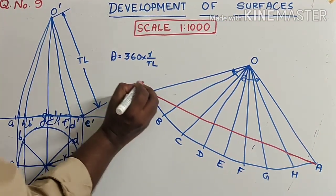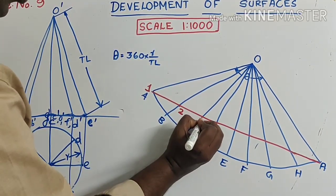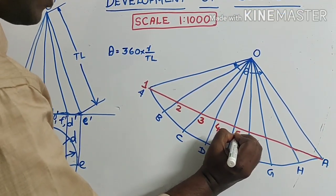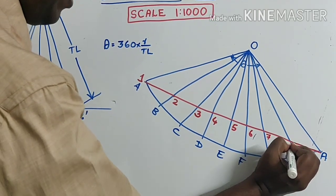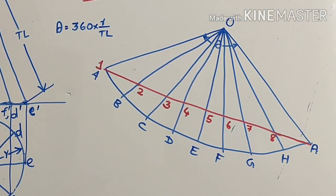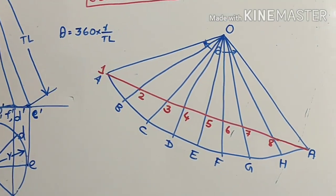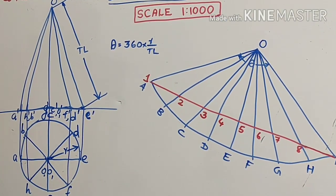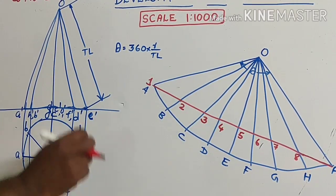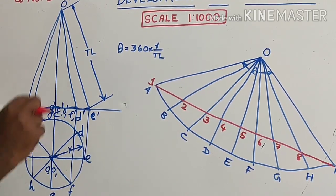Mark the initial point as 1. Along OB, get point 2; along OC, point 3; OD gives 4; continuing to get 5, 6, 7, and 8 along OE, OF, OG and OH respectively. Now transfer these distances to the front view and top view to get the shortest path. This straight line is the shortest path in the development; we need it in both front view and top view.